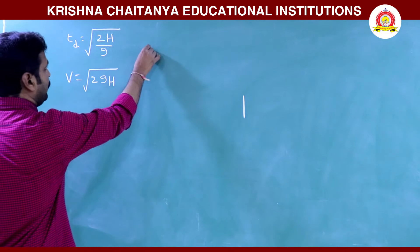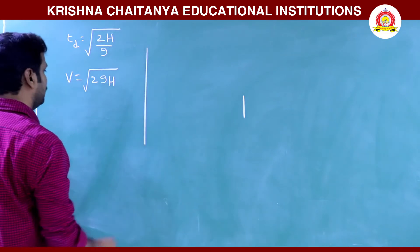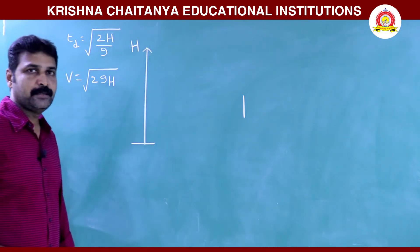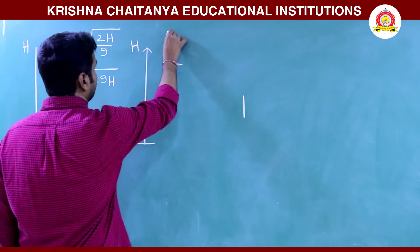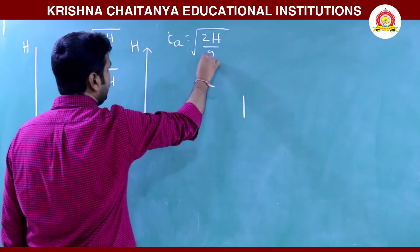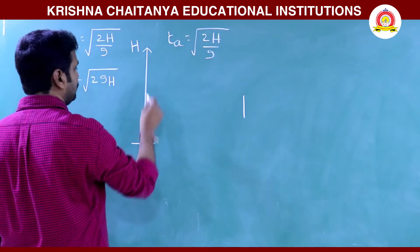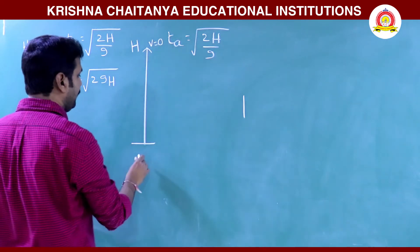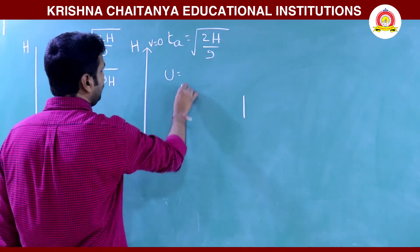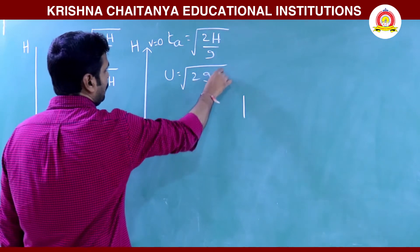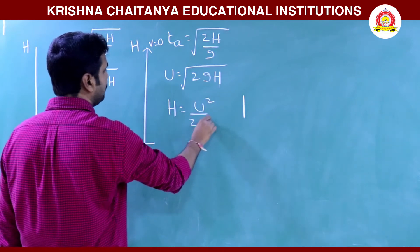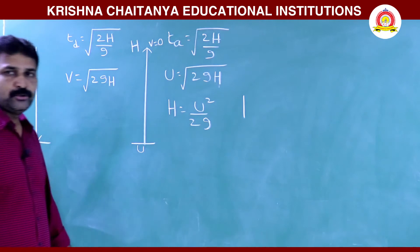For a vertically projected body projected from ground to the same height h, the time of ascent is √(2h/g). On reaching maximum height, final velocity is 0 and initial velocity is u. We derived u = √(2gh), where maximum height h = u²/2g.